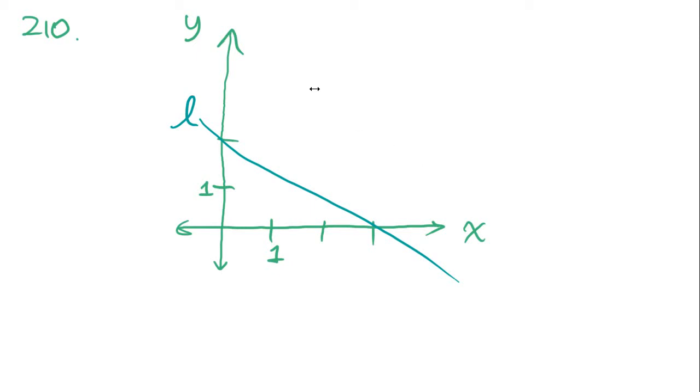We're on problem 210, which says, in the coordinate system above, which of the following is the equation of line L? We should remember the y equals mx plus b form, where b is the y-intercept and m is the slope. We're going to use this figure to figure out what m and b are, and then rearrange this into an x plus y equals z form.